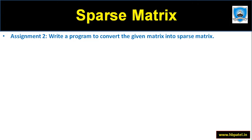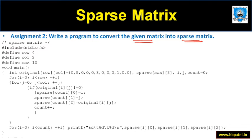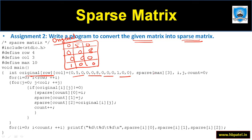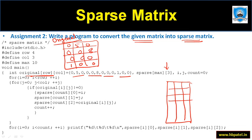The next program is to convert the given matrix into a sparse matrix. We have the original matrix with four rows and three columns with values: 0 5 0, 0 0 8, 0 0 0, 1 0 0. This is the original matrix and we want to convert it into a sparse matrix. The sparse matrix has three columns, and the number of rows is defined as some maximum number like 10.